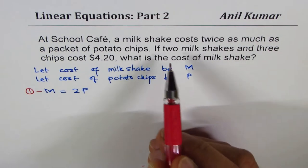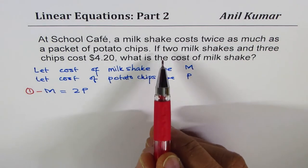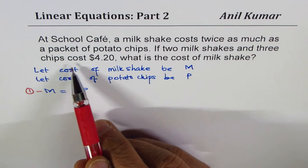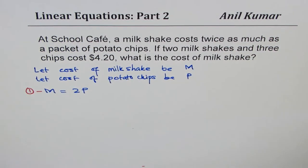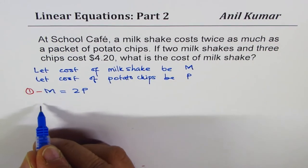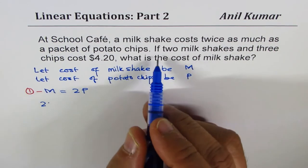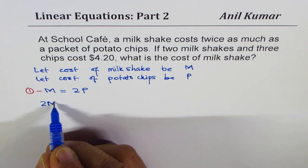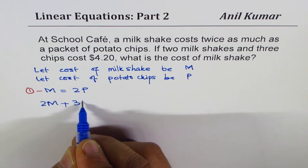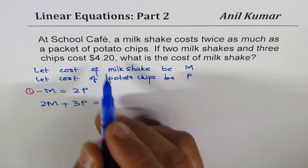The second statement is: if two milkshakes and three chips cost $4.20, that means 2M plus 3P equals 420 cents. We'll call this equation 2.